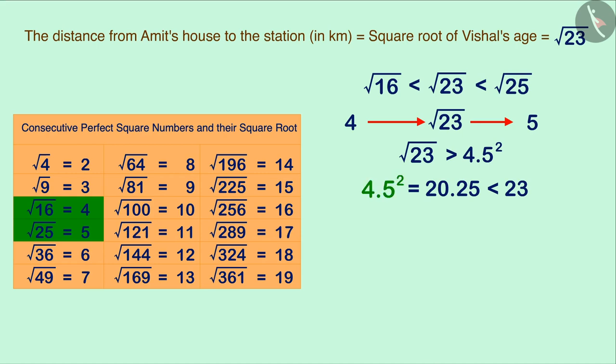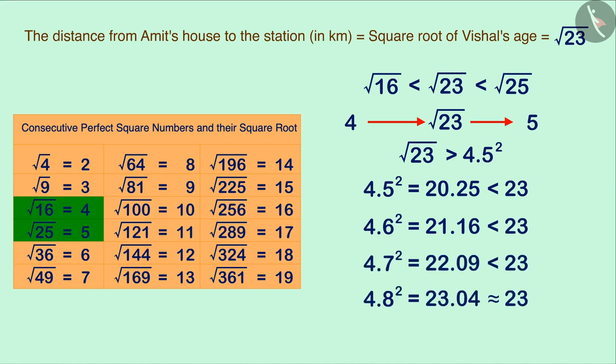Let us proceed further and instead of 4.5, let's try the square of 4.6, 4.7 and 4.8. Looking at the square root of 4.8, we can say that the square of 4.8 is closest to 23. From this, we can infer that the square root of 23 will be approximately equal to 4.8.